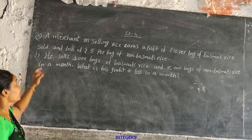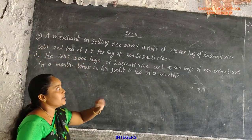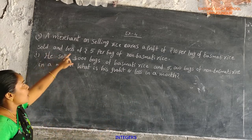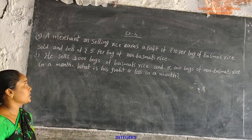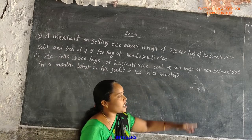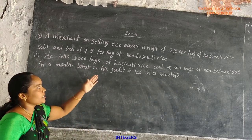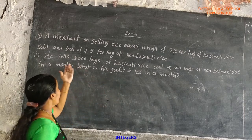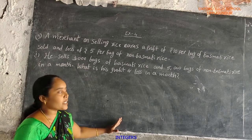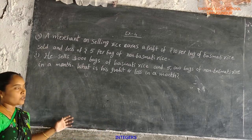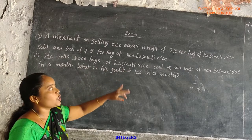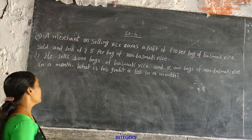Next, fifth problem. A merchant on selling rice earns a profit of 10 rupees per bag of basmati rice sold and a loss of 5 rupees per bag of non-basmati rice. First one: he sells 3000 bags of basmati rice and 5000 bags of non-basmati rice in a month. What is his profit or loss in a month? Given: profit of 10 rupees per bag of basmati rice.